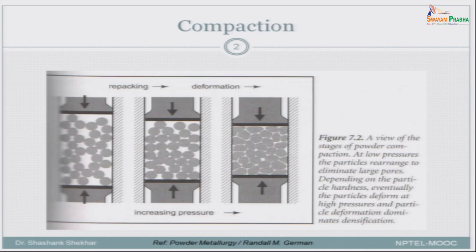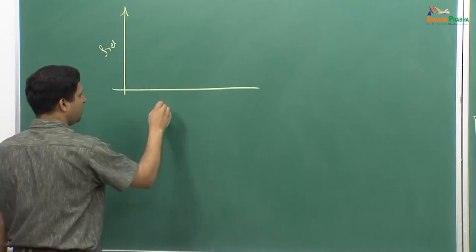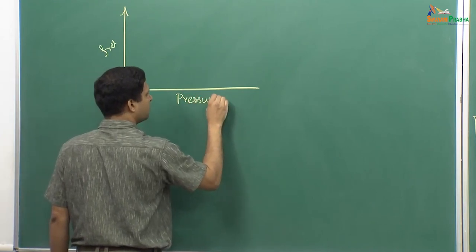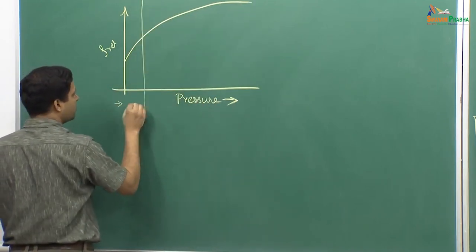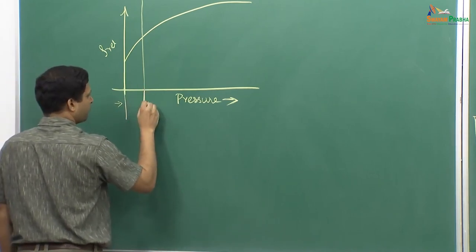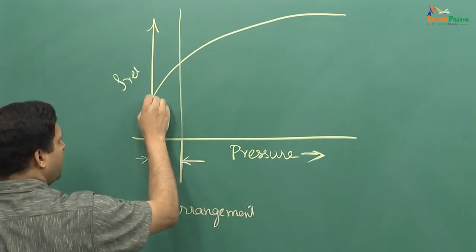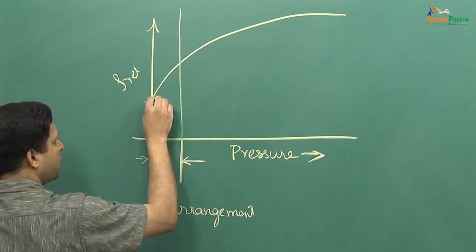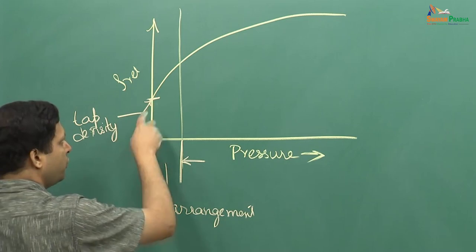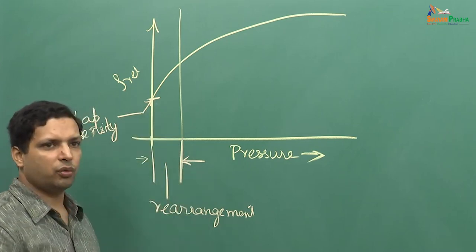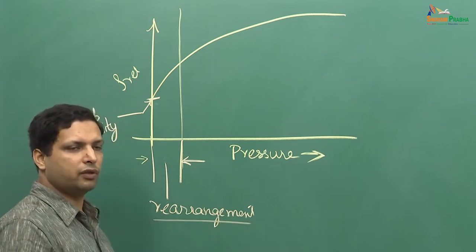This is how the plot of relative density versus compaction pressure would look. On the Y-axis is relative density, equivalent to packing fraction, and on the X-axis is pressure. Somewhere in the early region there is rearrangement going on, starting from the tap density — the density just after tapping. The compaction starts where consolidation ends. At first only rearrangements take place with negligible deformation.